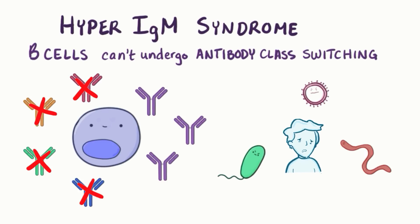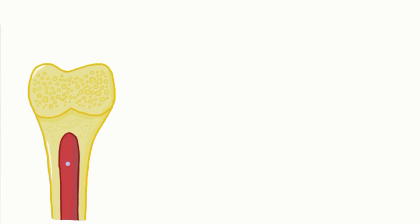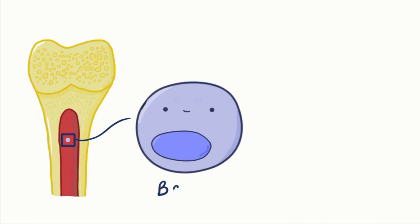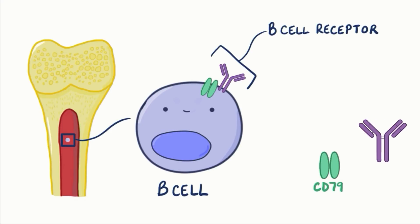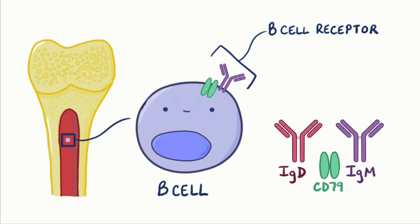Let's take a look at how B cells end up secreting different types of antibodies. Each B cell is born in the bone marrow from a stem cell and develops its own B cell receptor, which sits on the cell surface. The B cell receptor consists of two parts: a protein called CD79 that communicates with the rest of the cell, and a membrane-bound IgM or IgD antibody that can bind to an antigen.